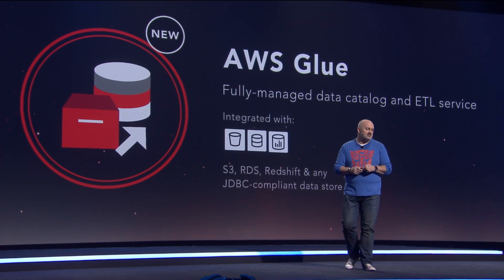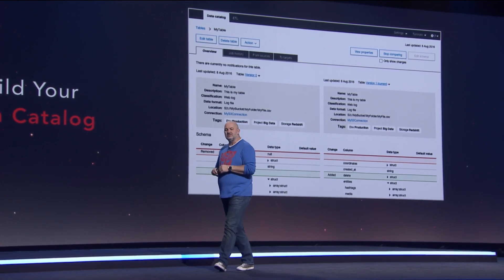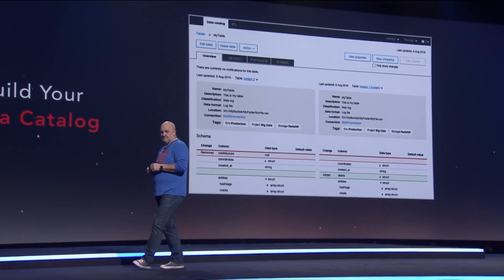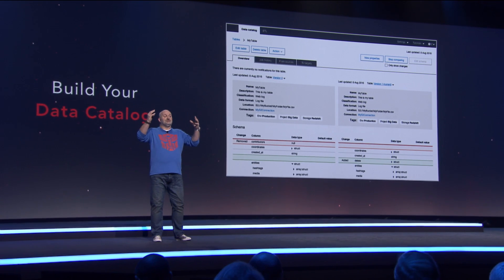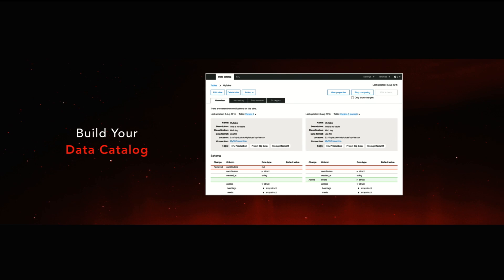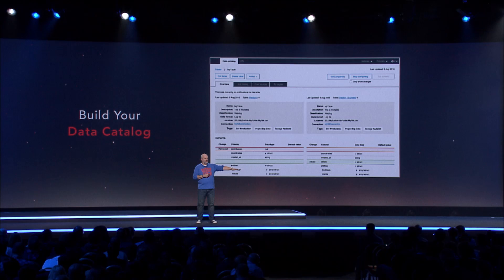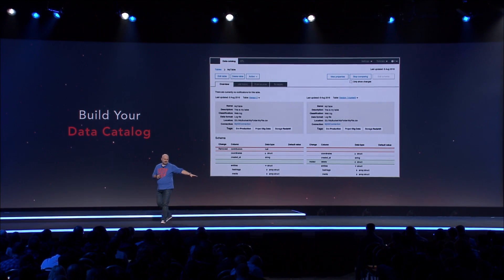Let's take a look at what sits in there. The first step you can do with Glue is to build your data catalog. You are able to point to different data sources — it might be S3, it might be your RDS instances, and most importantly, any JDBC database. That means you can also connect this to databases that you're still running on premise. This is not something that is cloud only; it can connect to databases in the cloud as well as on premise.